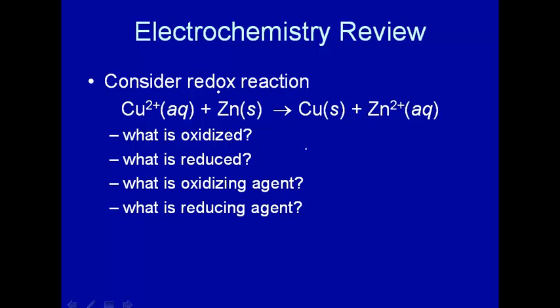Electrons are transferred from the zinc to the copper. What's oxidized? The thing that's oxidized is the substance or species that increases its oxidation number. Zinc has an oxidation number of 0, it goes to +2. Therefore zinc is oxidized. What's reduced? Well, that's the species that has a reduction in the oxidation number. Copper goes from +2 to 0. So copper is reduced.